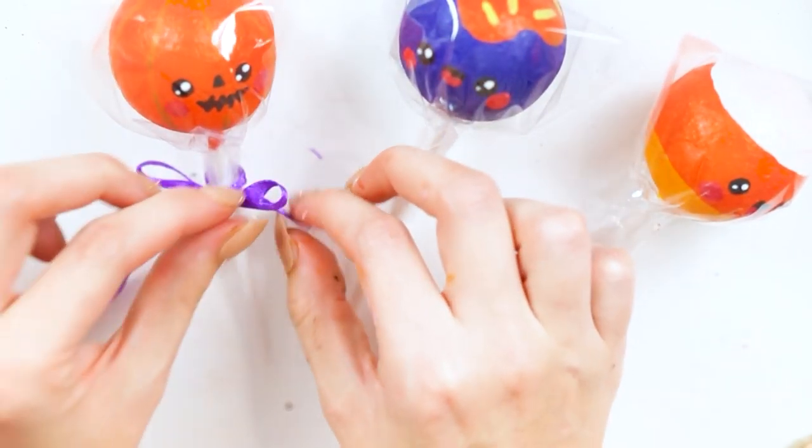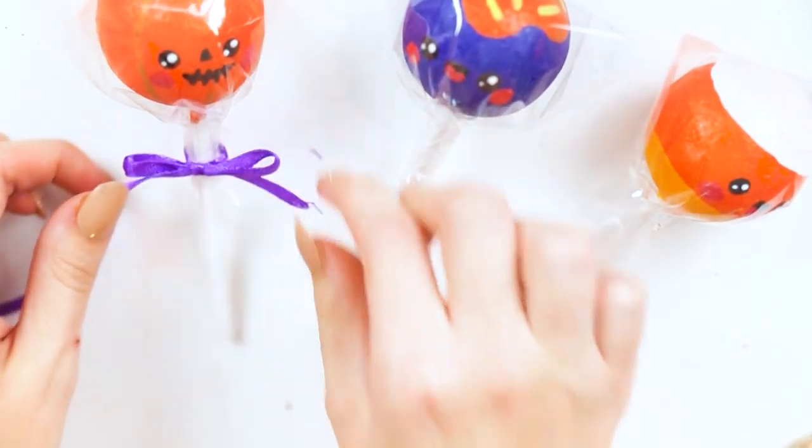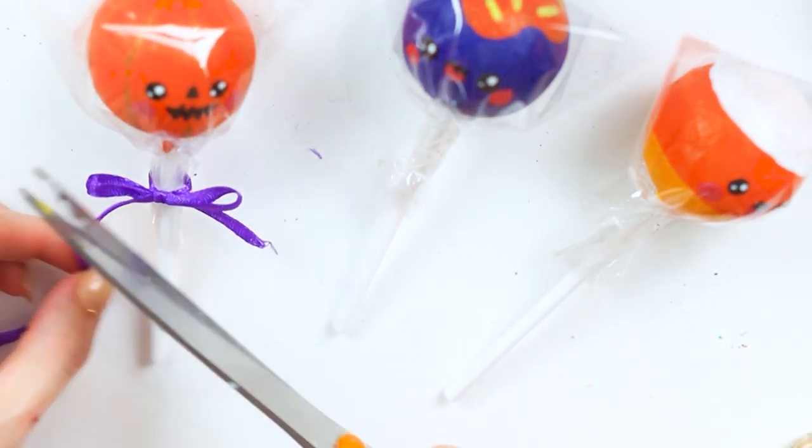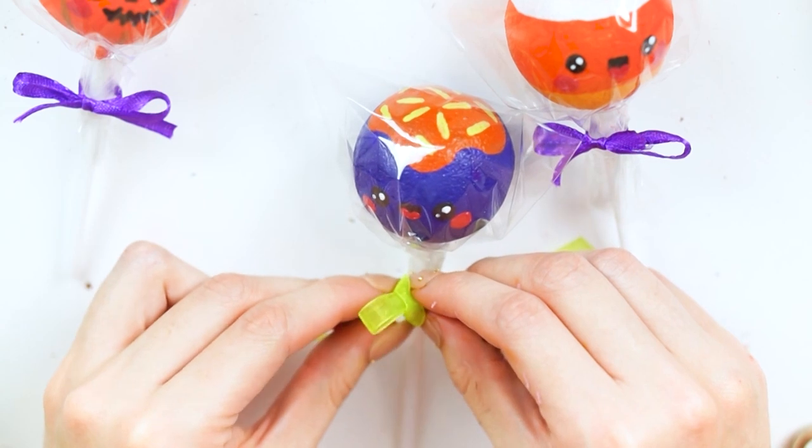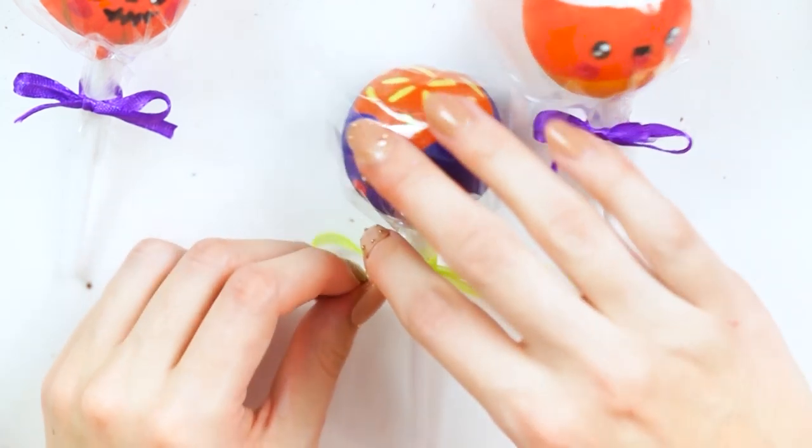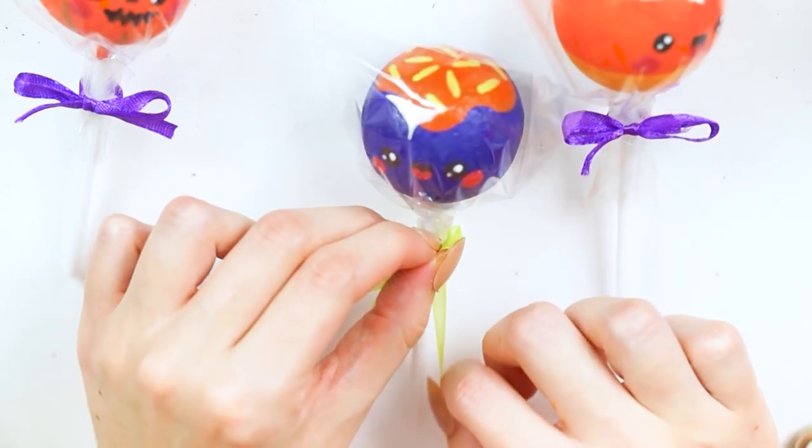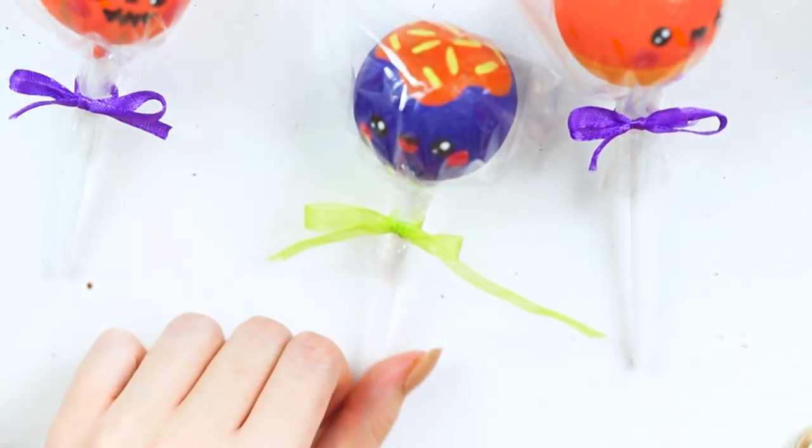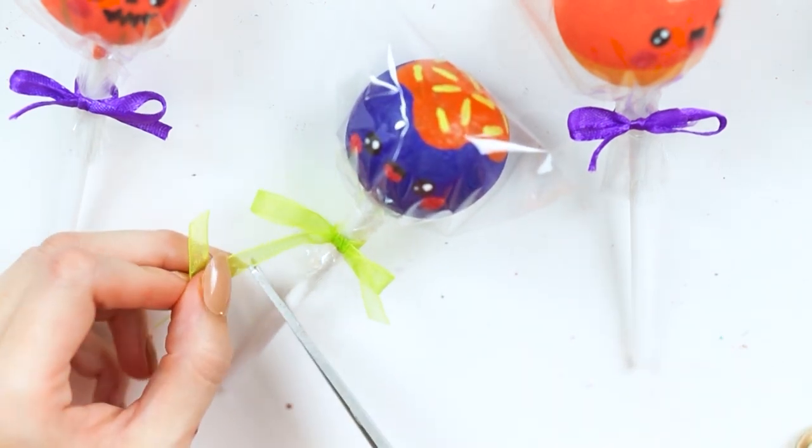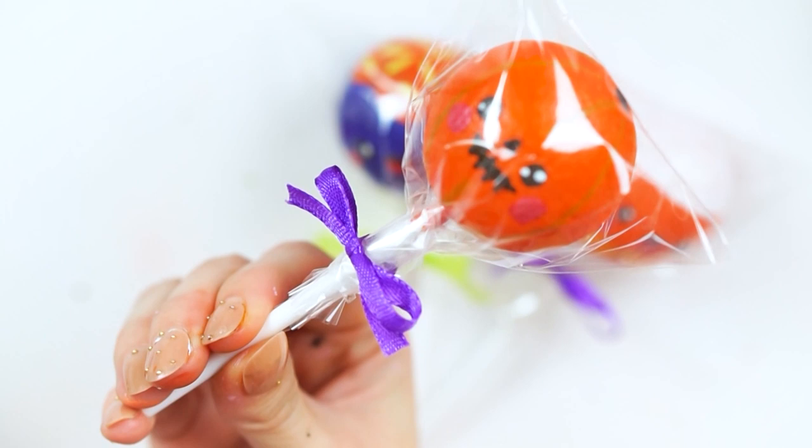For decoration I then went ahead and added some ribbon bows. I just tied that around the stalks where the tape was, so I used purple on the orange ones and then this bright green color, which kind of looks a little bit yellowy but it is green, on the one with the purple. So it just looked a little bit different from the actual squishies themselves. Once the packaging was done my squishies were complete.